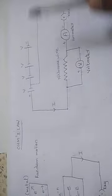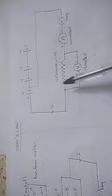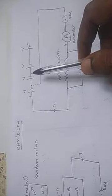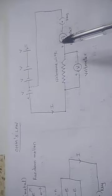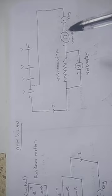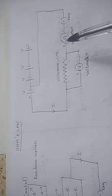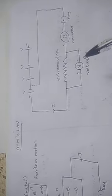Now, we are going to see what happens when the voltage — the battery value — is changed. What about the changing current? By using this simple circuit, we are going to change the voltage and we are going to note down what is the ammeter reading, that is the current variations.